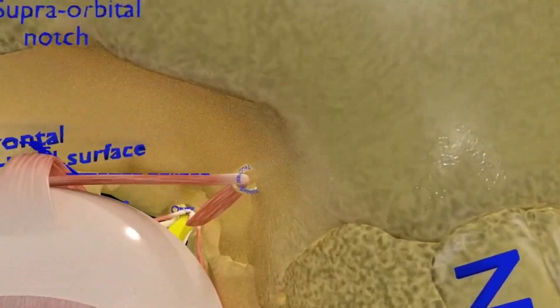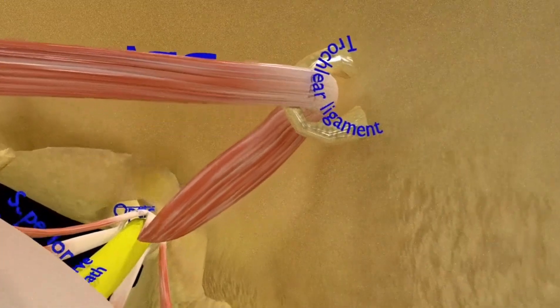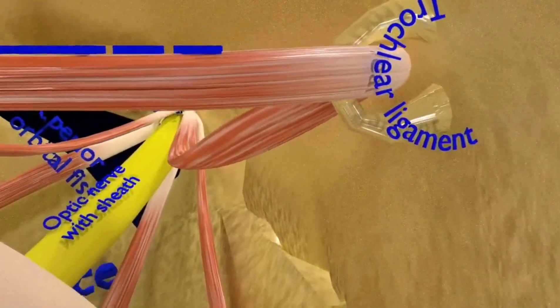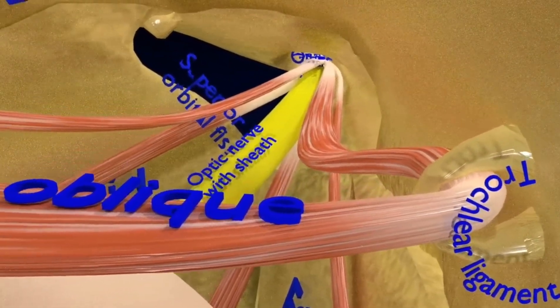Now, you can see the superior oblique with the middle tendinous part sliding on the trochlear ligament, attached to the frontal bone and working as a pulley for the action of superior oblique.